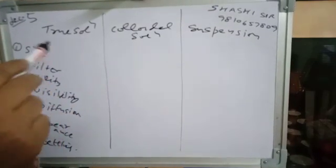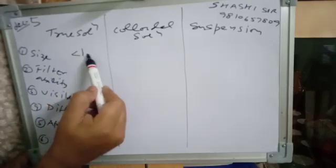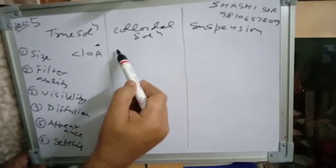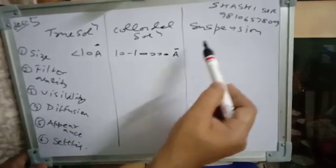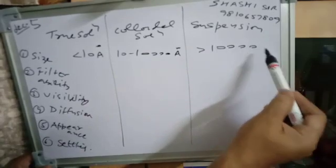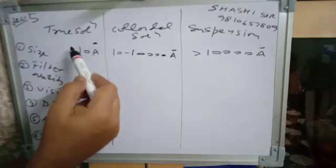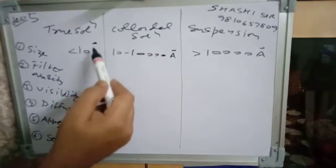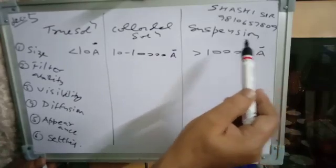On the basis of size: in case of true solution, size is less than 10 angstrom or 1 nanometer. For colloidal solution, size is 10 to 10,000 angstrom, or 1 to 1000 nanometer. For suspension, size is greater than 10,000 angstrom. True solution is also called crystalloid, and colloidal solution is called colloid.